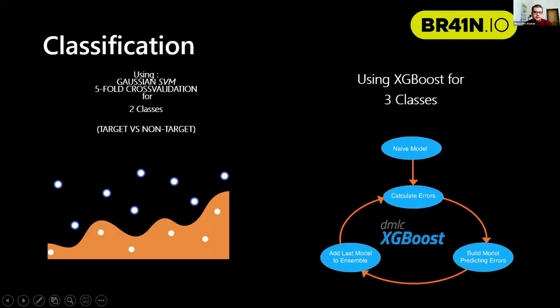For classification, we had two-class and three-class classifiers. The first one distinguishes between target and non-target. In the three classes, we distinguish between left, right, and non-target. We use extreme gradient boosting for the three classes and for the binary classification, the nu-SVM classifier.